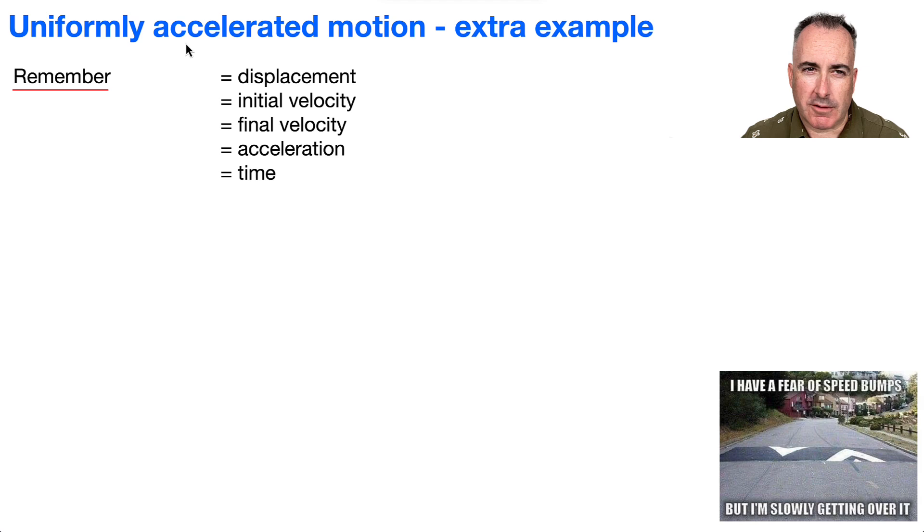I don't want you to forget the importance here. So S is displacement, U is initial velocity or speed, V is the final velocity or speed, A is acceleration, T is time. Don't forget units. This is in meters, this is meters per second, this is in meters per second. Don't forget acceleration is in meters per second squared, and time is in seconds.